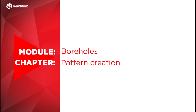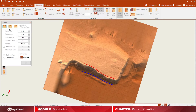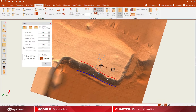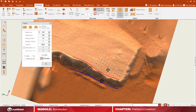In this video you will learn how to design blast patterns using different options. The first available option is the pattern creation tool. Click on the location where you want to place your design, then choose the type of design: regular, staggered, or reverse staggered, and set values for all geometric properties: burden, spacing, number of blast holes, number of rows, and attenuation.